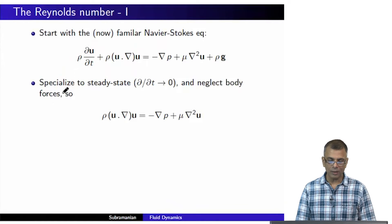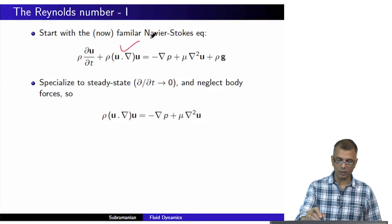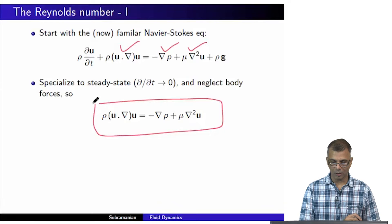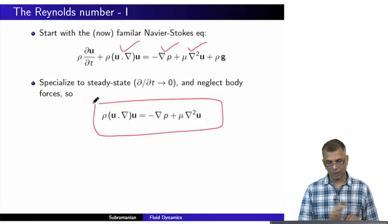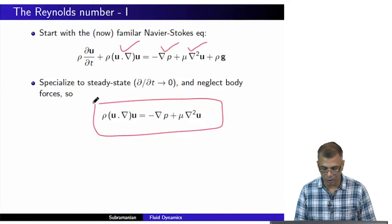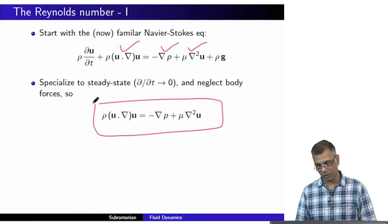Having done that, we are only left with the inertial term, the pressure gradient term, and the viscous term. That is what this equation is all about. Again, this is really just an F equals MA equation, just a slightly specialized version of the Navier-Stokes equation.